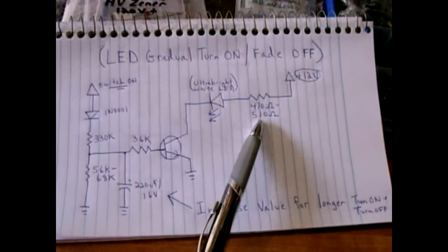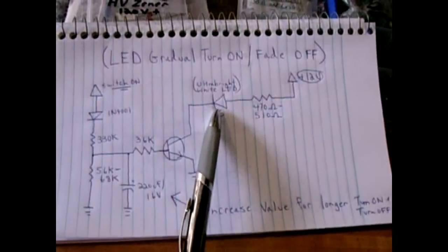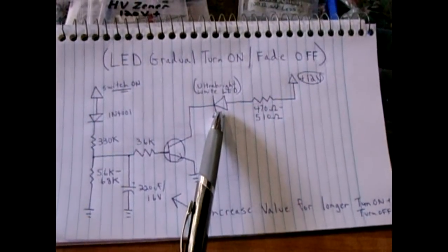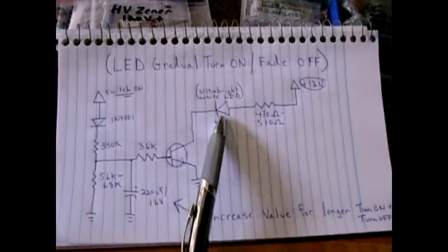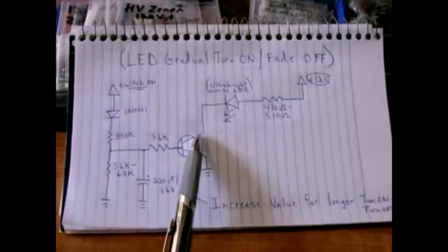In this case for 12 volts I'm using a 470 to a 510 ohm flowing into an ultra bright white LED. When I demonstrate I will be using a piranha ultra bright LED and that will flow into the collector.